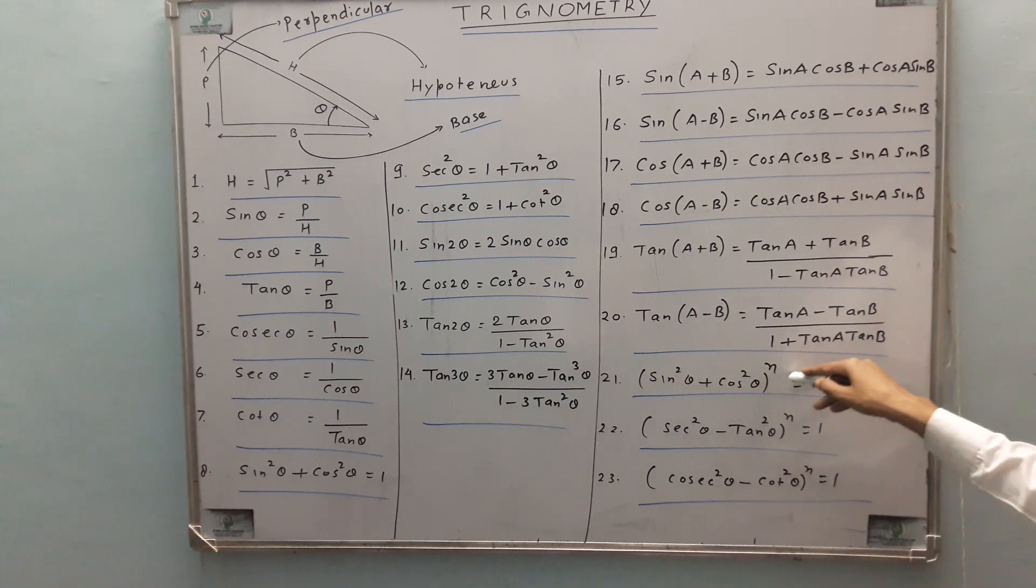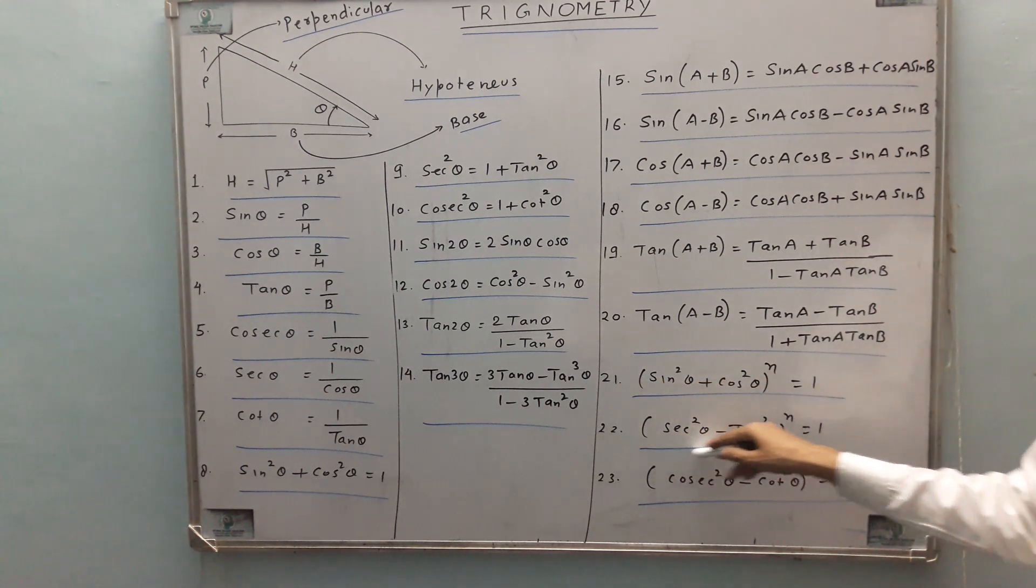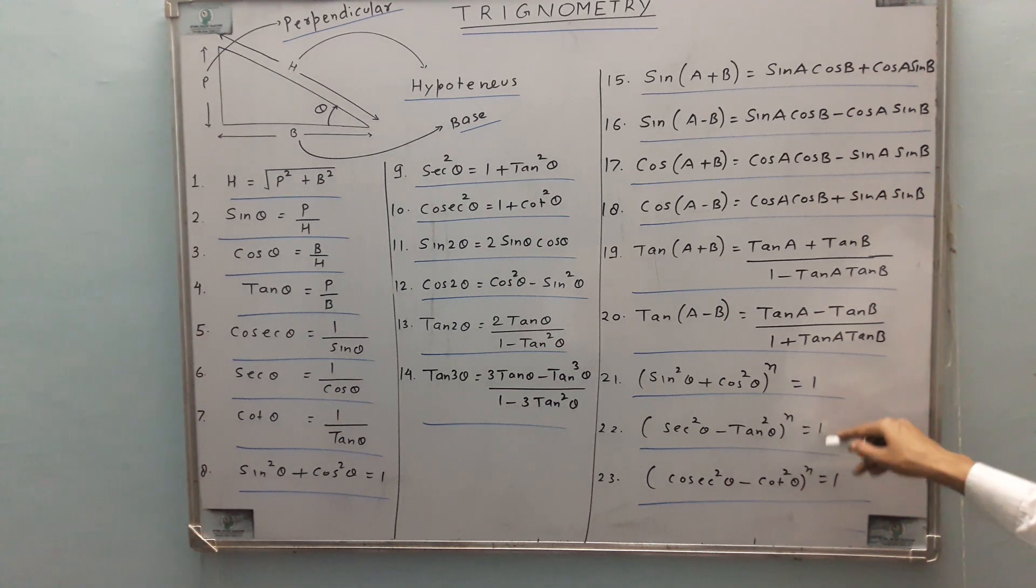21st is sin squared theta plus cos squared theta raised to power n is equal to 1. 22nd, sec squared theta minus tan squared theta raised to power n is 1. 23rd is cosec squared theta minus cot squared theta raised to power n is equal to 1.